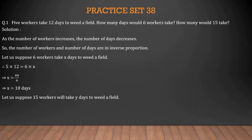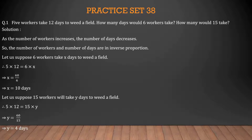Now let 15 workers take Y days to build a field. 5 × 12 = 15 × Y, so 60 = 15Y, giving Y = 60/15 = 4 days. Hence, 15 workers will take 4 days to build a field. In summary, 6 workers will take 10 days while 15 workers will take 4 days to build a field.